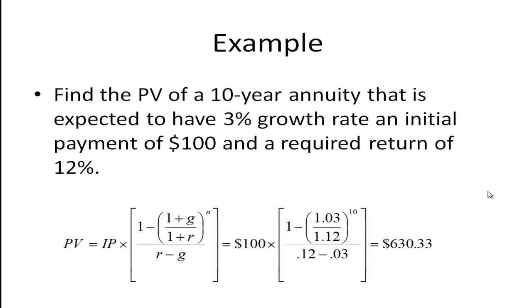So let's look at an example. Let's find the present value of a 10-year annuity that is expected to have 3% growth and an initial payment of $100 and we'll assume there's a required return of 12%. So we just plug into this formula here, the initial payment is a hundred, the growth rate is 3% so 1.03 up here, the required return is 12% so 1.12, divide 1.03 by 1.12 and raise it to the 10th power and then subtract that number from 1 and then divide this whole number by 0.12 minus 0.03 and then multiply it by a hundred and if you do that you should get six hundred and thirty dollars and thirty three cents.